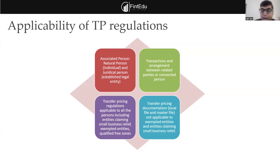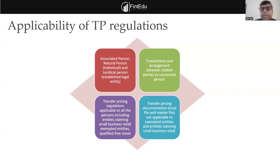Transfer pricing regulations — meaning the arm's length principle — are applicable to all entities, whether they are claiming small business relief, exempted entities, or qualifying free zone persons. If you have a transaction between two free zone entities, it is applicable. If an entity claiming small business relief is entering into a transaction with another entity, transfer pricing regulations are applicable. The question of transfer pricing documentation is different.